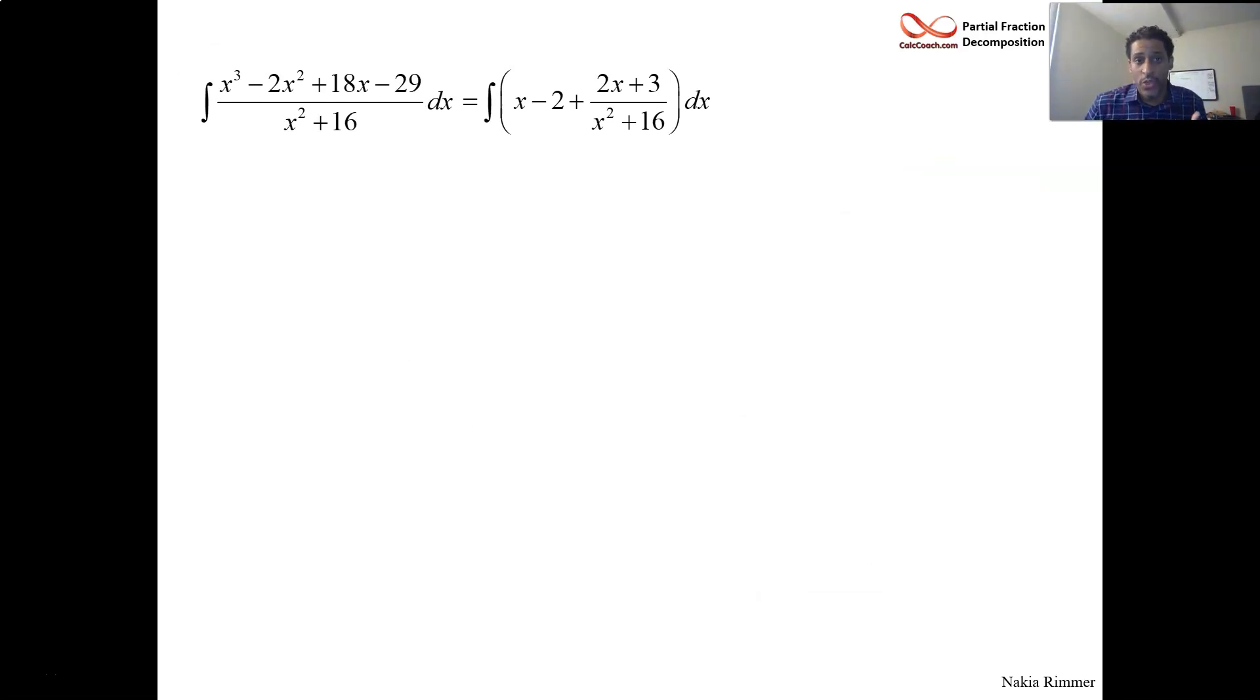And you see the denominator, x squared plus 16. x squared plus 16 is an irreducible quadratic. But there's no other terms. You don't have to partial fraction decompose it. This is the ax plus b that is on top of the irreducible quadratic. And so since it's the only term, there's no need to use partial fraction decomposition.